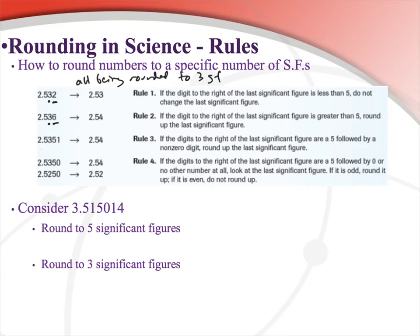Rounding 2.5351 to three significant figures: the 3 is the last significant figure, and it's followed by a 5. Rules one and two don't apply here. Rule three says if the digit to the right of the last significant figure is a 5 followed by non-zero digits — like 5, 2, 1, 6, etc. — round up the last significant figure. So 2.5351 has that 3 followed by 5 and then 1, so the 3 rounds up to a 4.